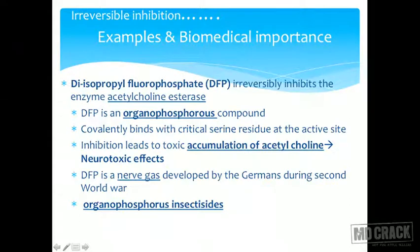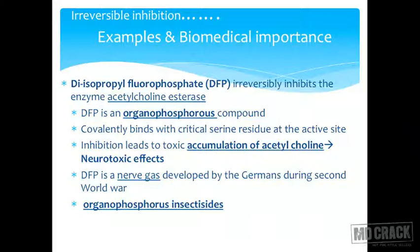One important example is diisopropylfluorophosphate, known as DFP. DFP irreversibly inhibits the enzyme acetylcholinesterase. It is an organophosphorus compound that binds with the critical serine residue at the active site of the enzyme. Though its kinetics resemble non-competitive inhibition, it binds to the active site — covalently binding and bringing about inhibition. This leads to toxic accumulation of acetylcholine, causing neurotoxic effects.